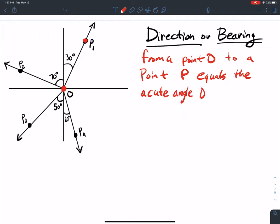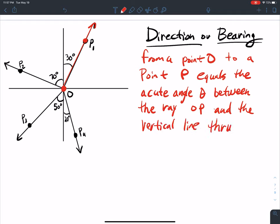This angle theta is between the ray OP and the vertical line through O, which is my north-south line.